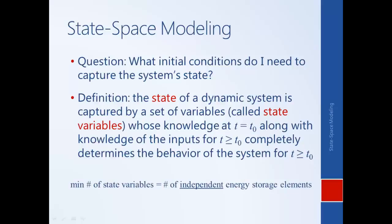It turns out that the minimum number of state variables needed to capture a system's state is equal to the number of independent energy storage elements. The energy stored in the system at a current instant of time affects the behavior going forward. So if we can capture or determine the energy that's stored, we can determine what's going to happen in the future.